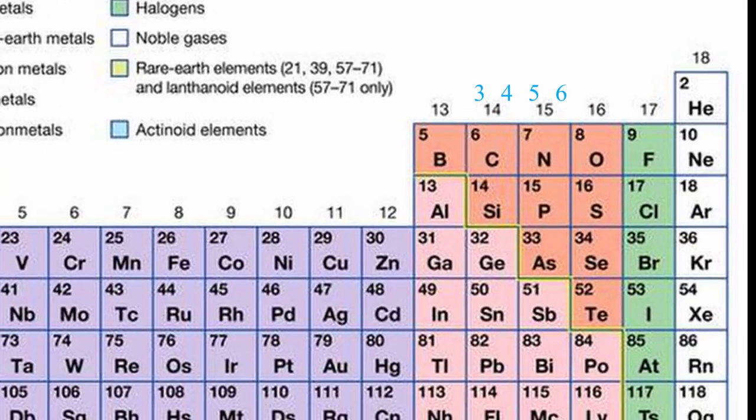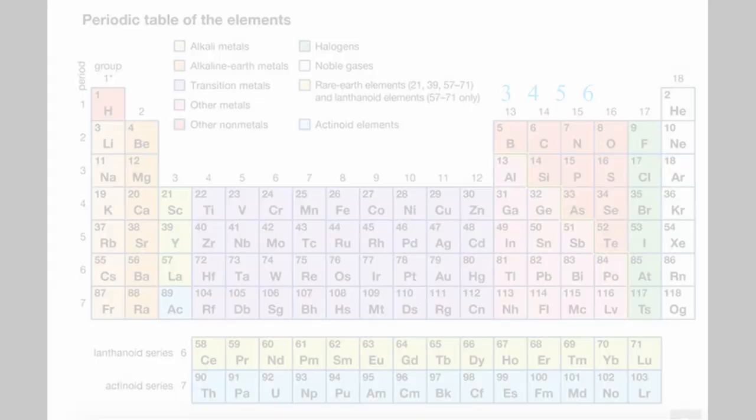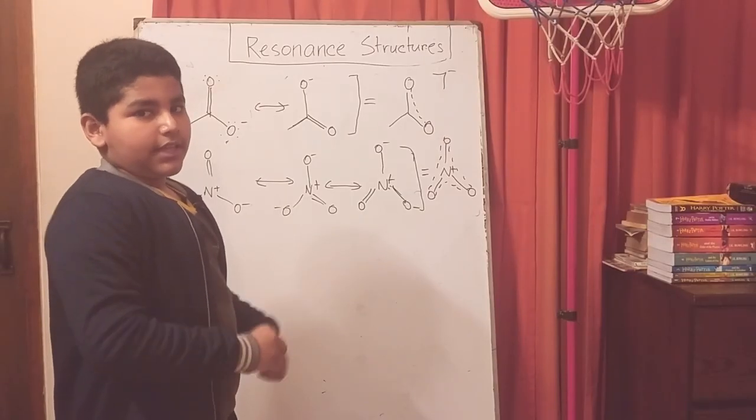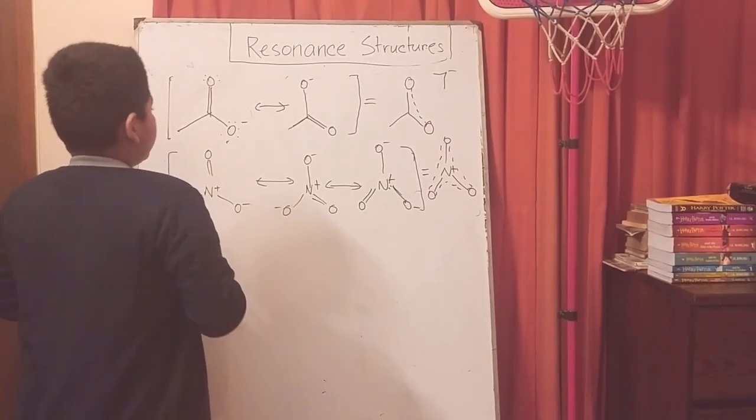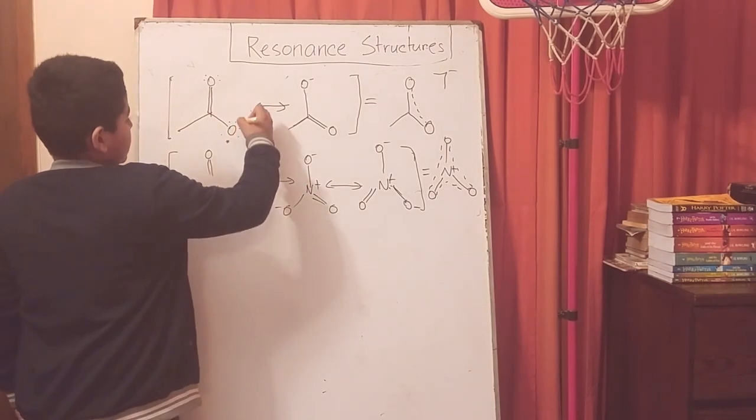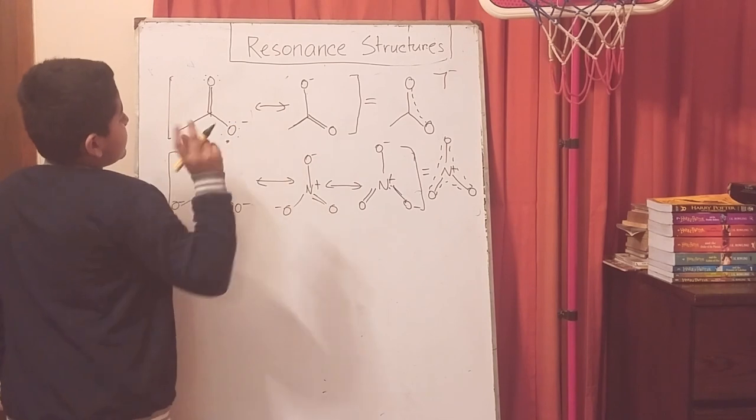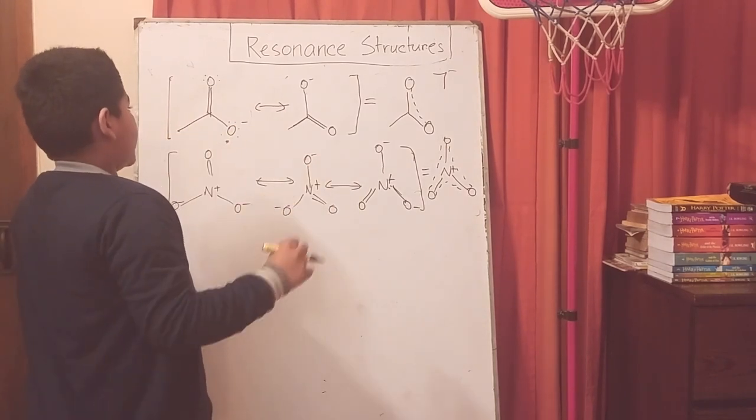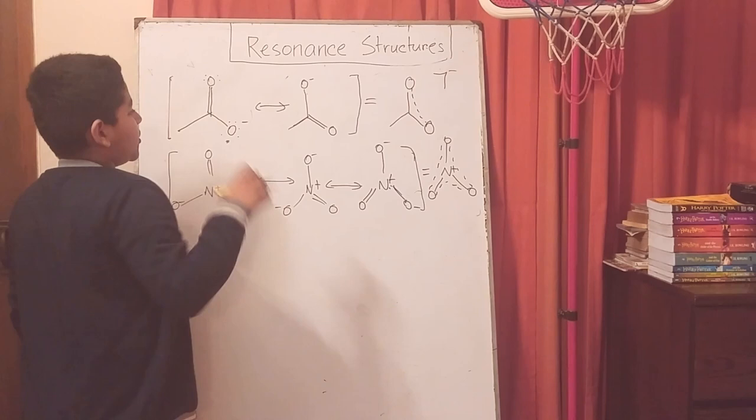If we look at the periodic table, oxygen is on the sixth row, that means there will be six valence electrons. But here, if we draw out the valence electrons, there are actually seven valence electrons, so it will have a formal negative charge.